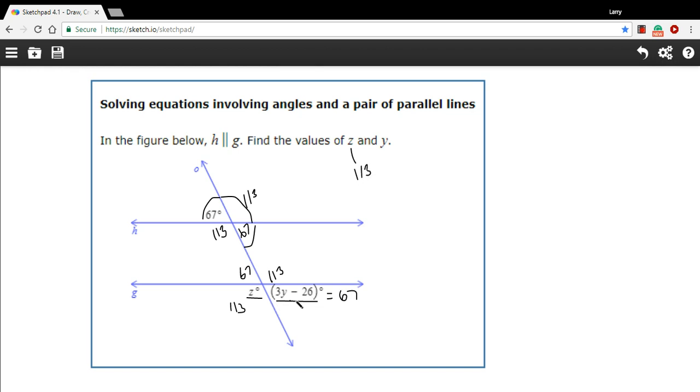To find y, we just have to solve this equation. We have 3y minus 26 equals 67. To solve this, I can add 26 to both sides. That would give me 93 equals 3y. And then to solve for y, we're going to divide by 3, and we get y equals 31.